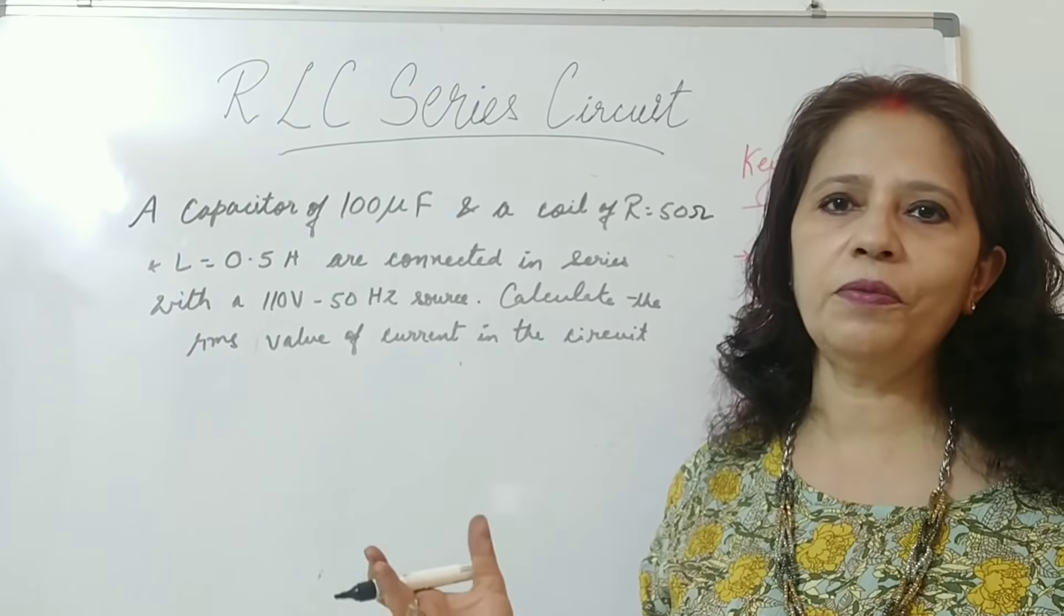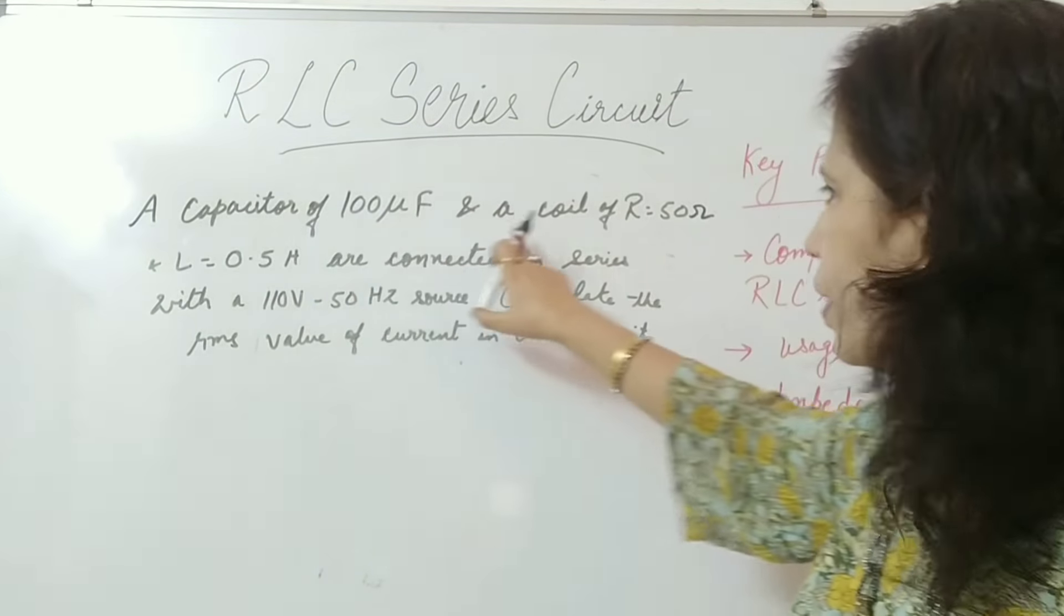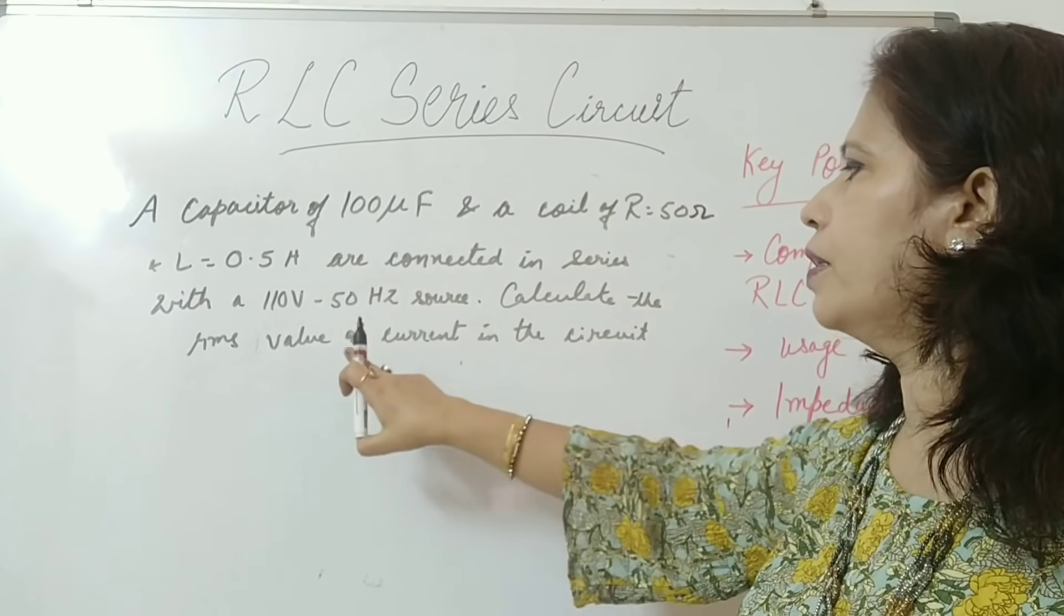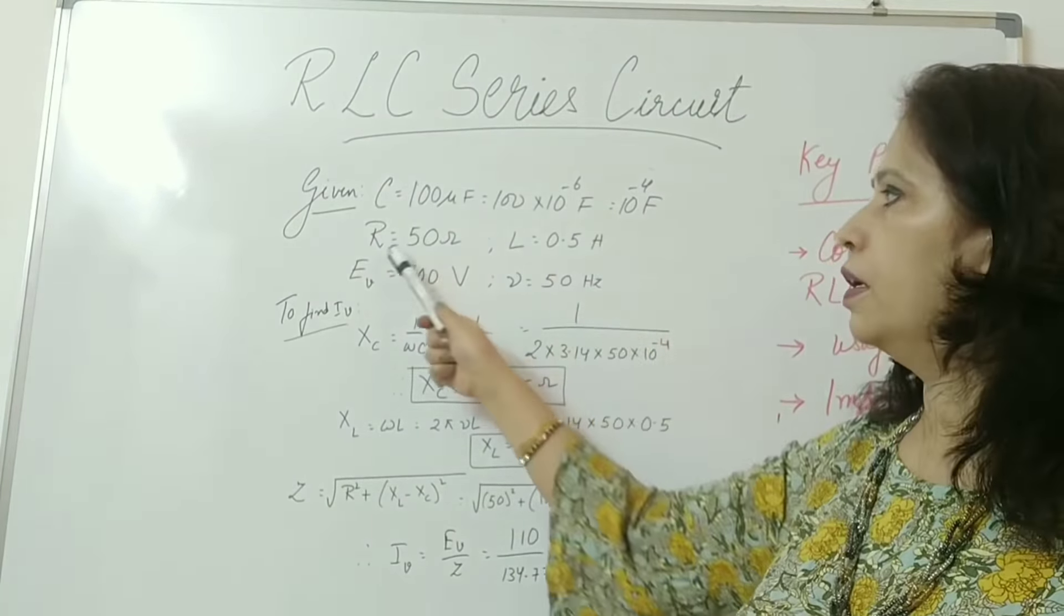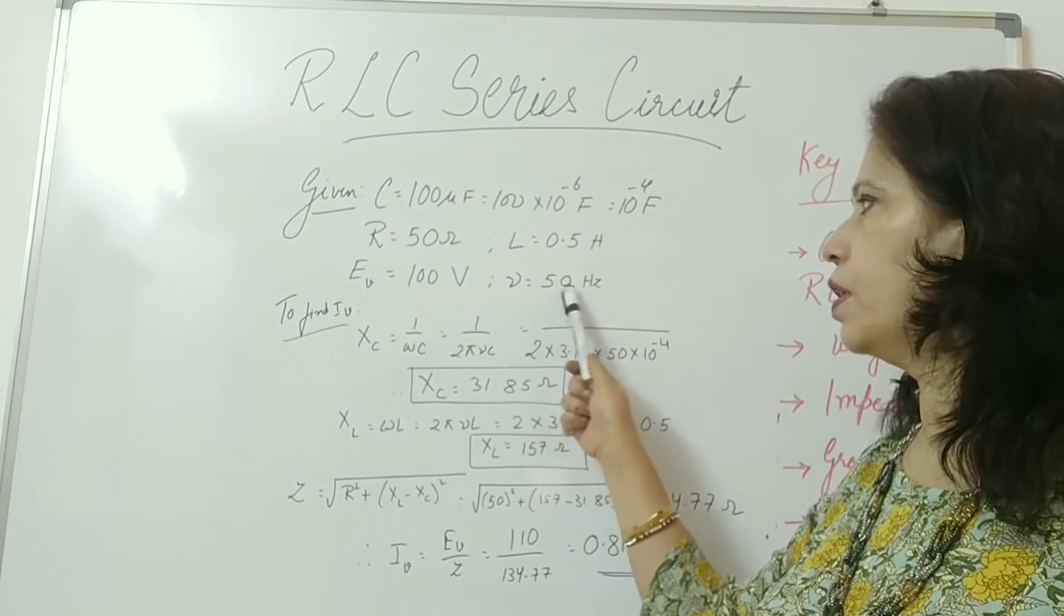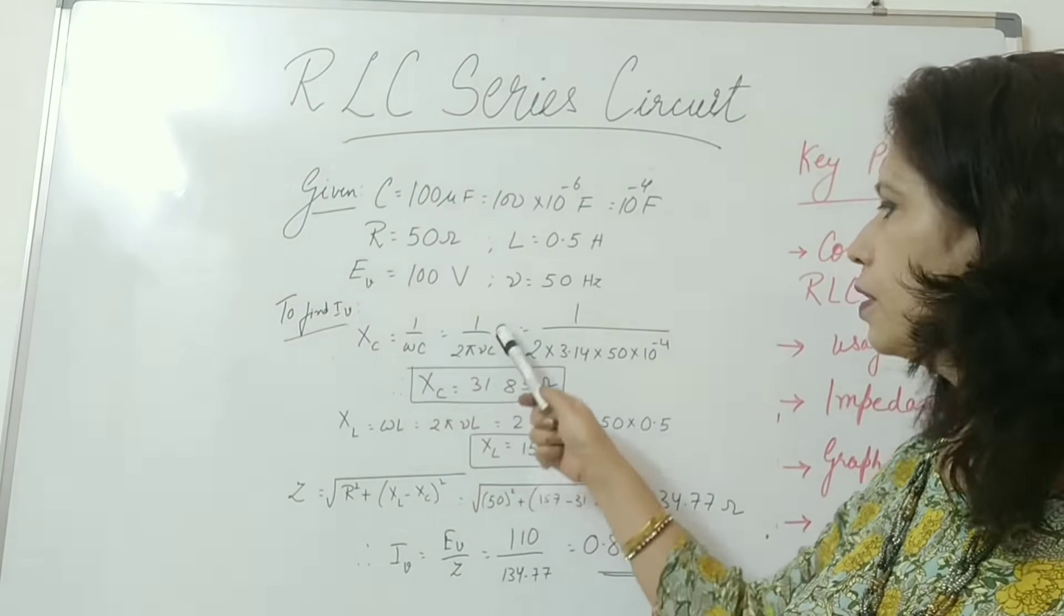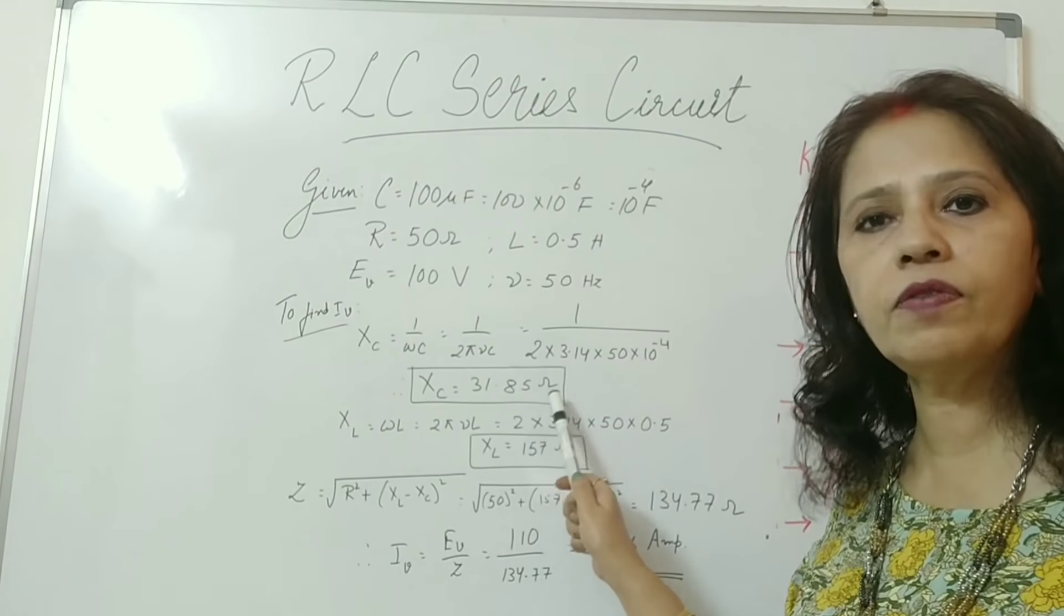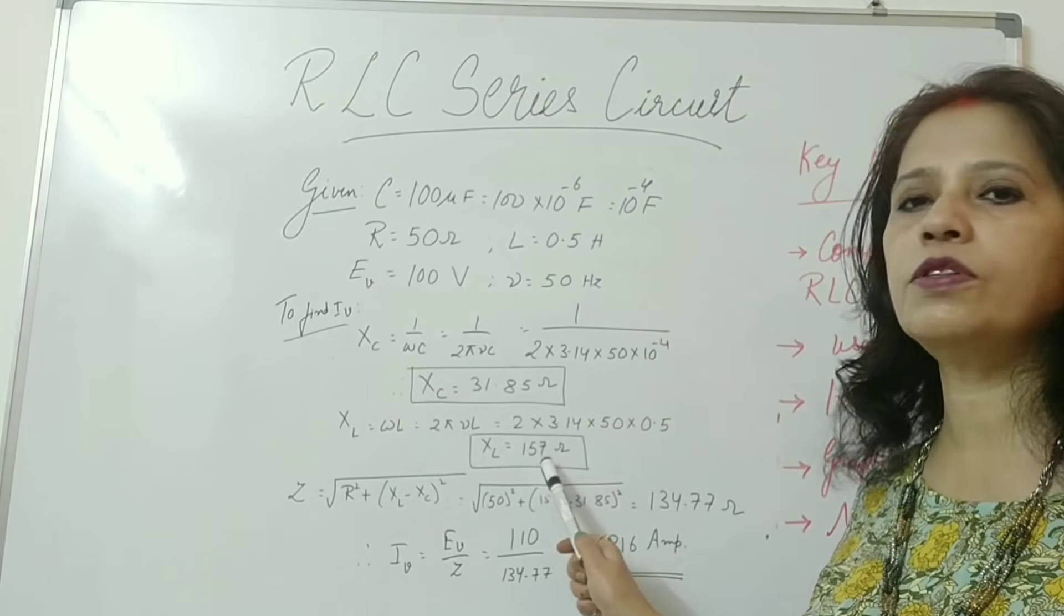Now any topic without a numerical is incomplete. So let us discuss one of the numerical. Others will be discussed in the other classes. A capacitor of 100 microfarad and a coil of resistance 50 ohm and inductance 0.5 Henry are connected in series with a 110 volt and 50 hertz source. Calculate the RMS value of current in the circuit. Now the things given here are C equals to 100 microfarad which you can change it in farad. Resistance equals to 50 ohm and E equals to 110 volt. L equals to 0.5 H. Frequency equals to 50 hertz. So for finding Z first we need to find XC and XL. So XC equals to 1 upon Omega C. This comes out to be 1 upon 2 pi nu C which by substituting the values we are getting 31.85 Omega. Similarly XL equals to Omega L and again by putting all the values we get XL equals to 157 ohm.